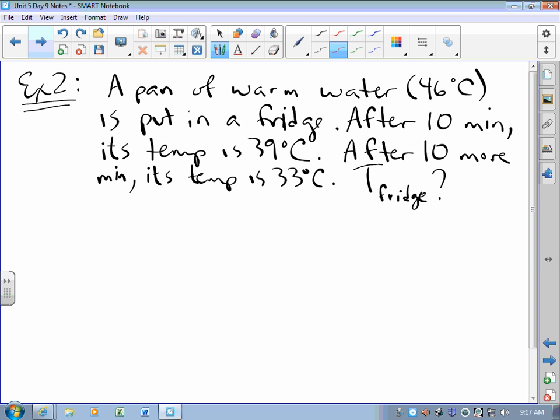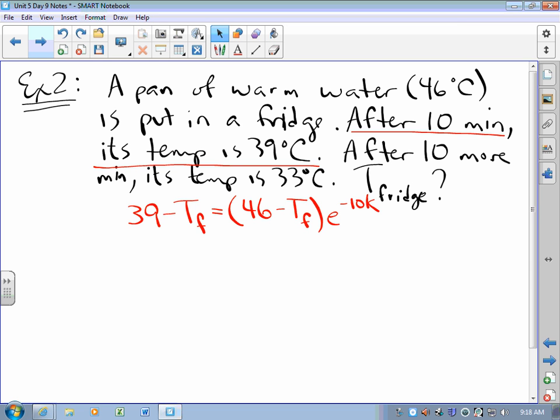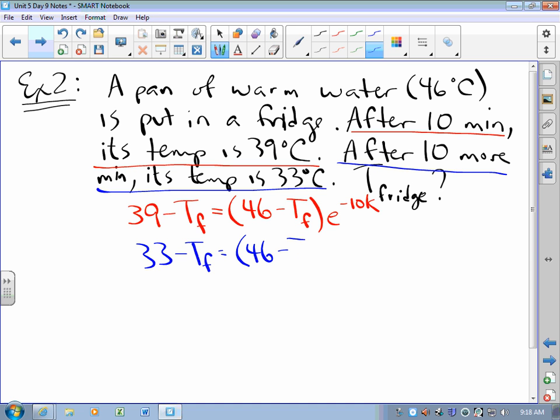So, we're told after 10 minutes the temperature of the water is 39 degrees Celsius, which means that 39 - T_fridge = (46 - T_fridge)e^(-10K). Then we're told after 10 more minutes its temperature is 33 degrees Celsius, and so a similar equation can be written. Boy, this is a system of equations with two equations and two variables.